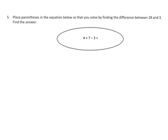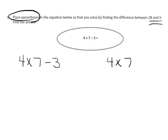So now, it says, place the parentheses in the equation below so that you solve by finding the difference between 28 and 3. So we're supposed to put in parentheses. So this expression is missing some parentheses. So let's put them in. So I'm going to start by going way over here. 4 times 7 minus 3. Because I have a couple of choices about where I can put the parentheses. I could put the parentheses there around the 4 times 7, or I could put the parentheses here around the 7 minus 3.